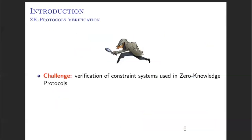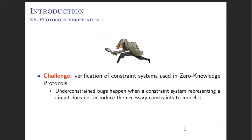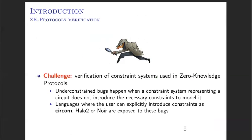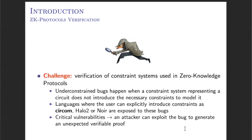In our work, the problem that we focus on is the verification of these constraint systems. One of the most typical bugs in Zero Knowledge protocols is to not include all the necessary constraints in order to correctly model the statement being verified. These bugs are known as under-constrained bugs, and they are typical of languages such as CIRCOM, HALO2, or NOIR, where the user can explicitly define which constraints are part of the constraint system. These bugs can be critical, as a malicious prover can exploit these vulnerabilities in order to generate a verifiable proof that is not correctly modeling the statement.